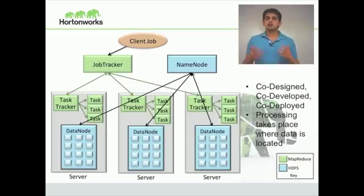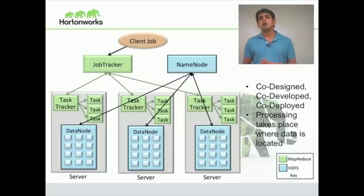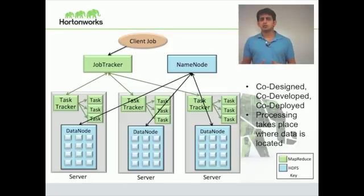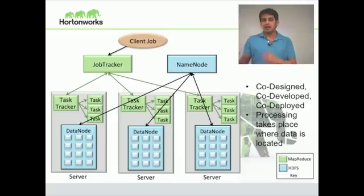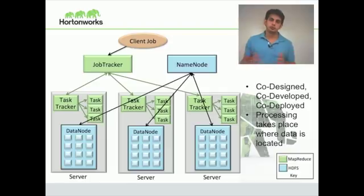The job tracker and the task tracker form the two major components of MapReduce. The job tracker is the master. He does two important aspects: resource management — knowing which task trackers are up, which are down, which are having trouble, which task trackers have free resources to run tasks — and also job lifecycle management, knowing how many maps are done, where to schedule them, whether they failed, how to deal with failures, and all of that.